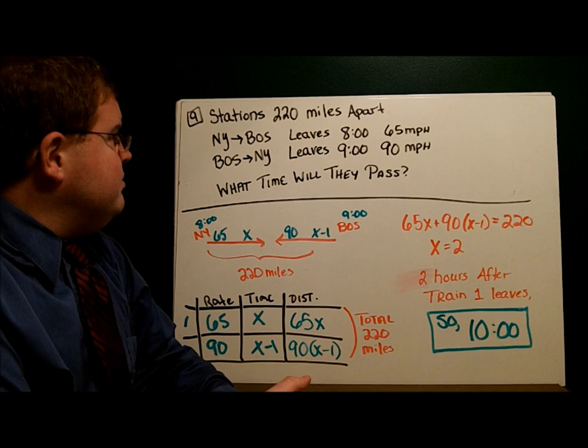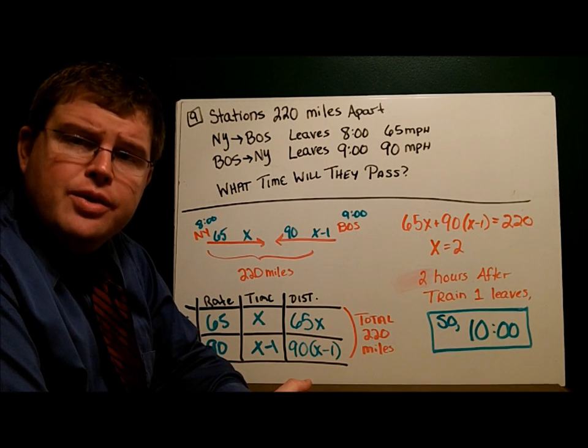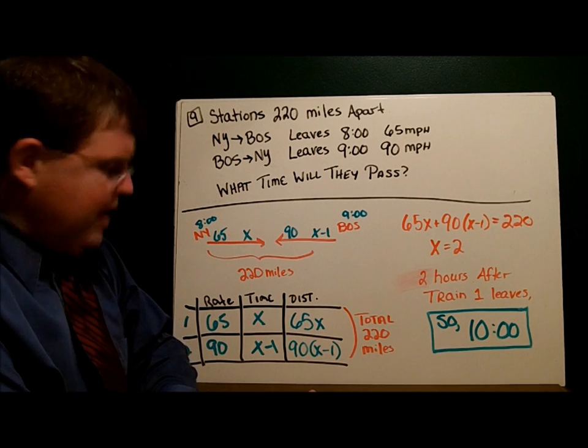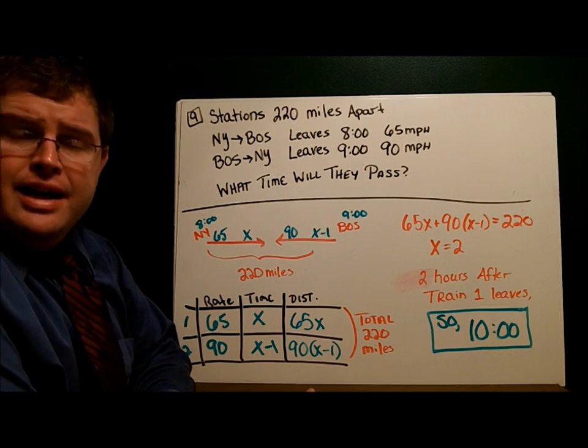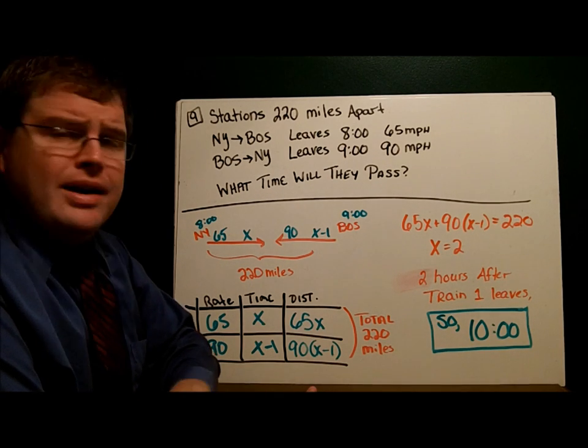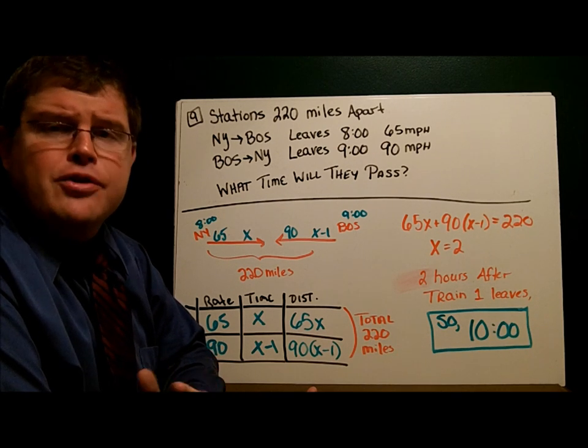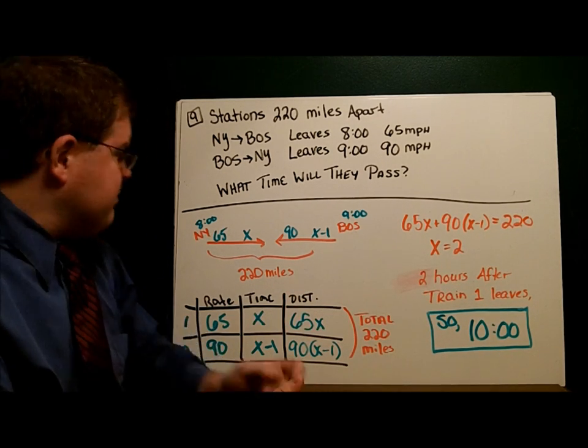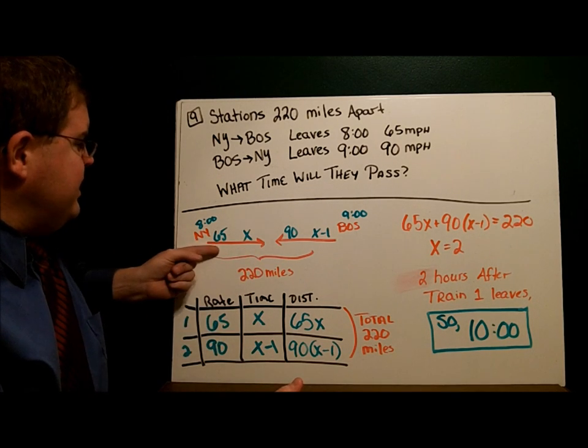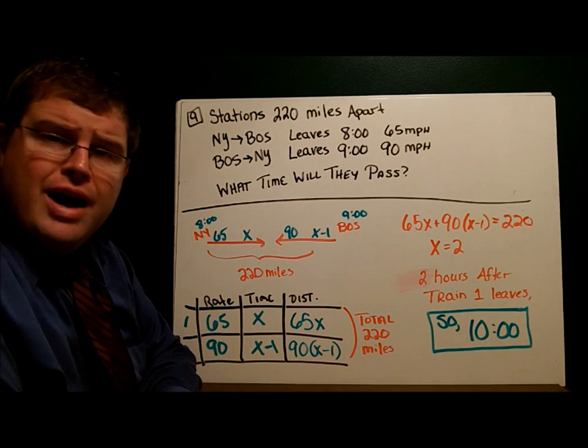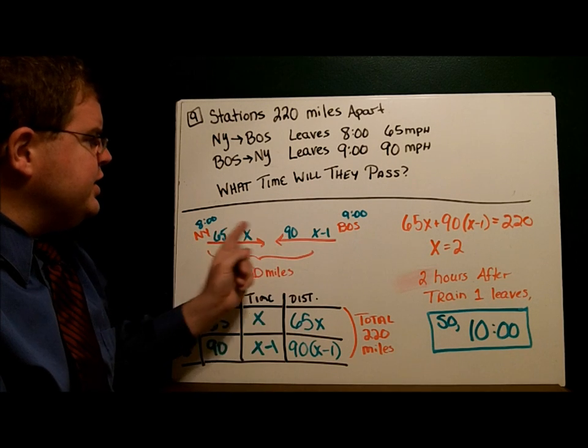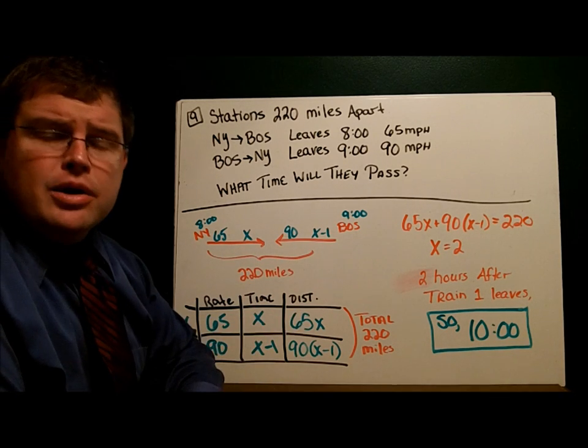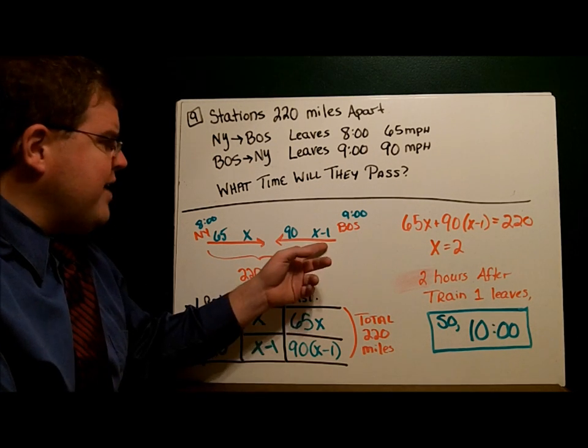In example 9, we have train stations 220 miles apart, one in Boston and one in New York. The New York to Boston train leaves at 8 a.m., travels 65 miles per hour. The Boston to New York train leaves at 9 and goes 90 miles per hour. What time will they pass? Here's our picture: New York to Boston, 65 miles per hour. We don't know how long it traveled for. It left at 8 o'clock. Boston to New York left at 9 o'clock, 90 miles per hour. If this one went X hours, this one left an hour later, so it traveled one hour less. This one traveled X minus 1, one less than the other train.